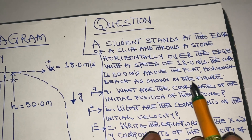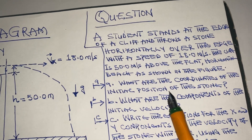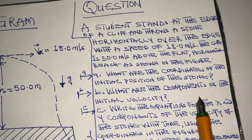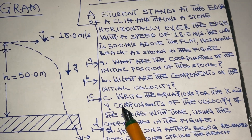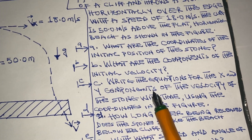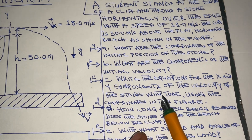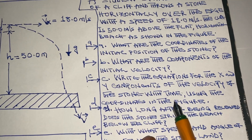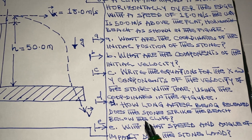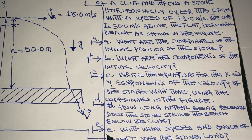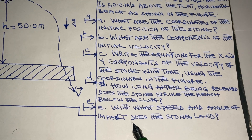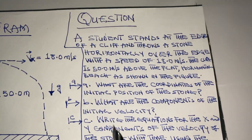The questions are: (a) What are the coordinates of the initial position of the stone? (b) What are the components of the initial velocity? (c) Write the equations for the x and y components of the velocity of the stone with time using the coordinates in the figure. (d) How long after being released does the stone strike the beach below the cliff? And (e) with what speed and angle of impact does the stone land?